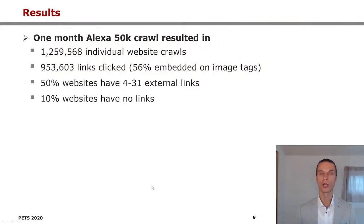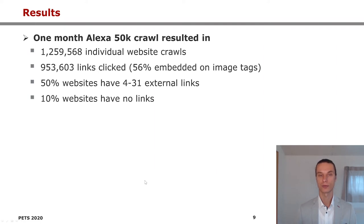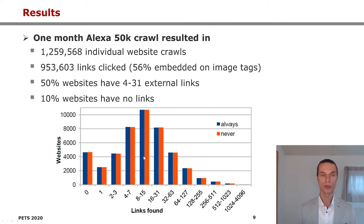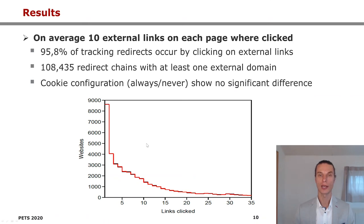The month-long crawl of the Alexa 50k website list resulted in nearly 1,260,000 individual website crawls, in which our crawler clicked on nearly 1 million links, 56% of them embedded on image tags. Most websites had 4 to 31 external links we could click on, and 10% of websites had no links. On average, our crawler clicked on 10 external links on each page visited. As a pre-study showed, 95% of tracking redirects occurred on external links, so we focused only on clicking external links. In our crawling data, we recorded over 100,000 redirect chains with at least one external domain.